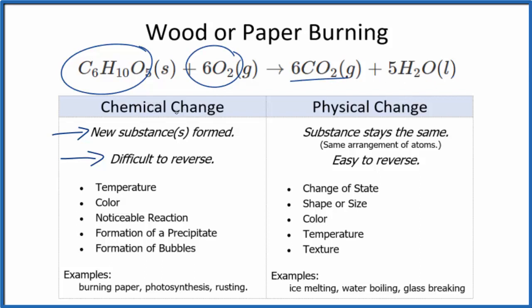a new substance is formed. That makes wood or paper burning a chemical change. With a chemical change, we would expect a change in temperature, probably in color—it'd be a very noticeable reaction taking place. And often we'll